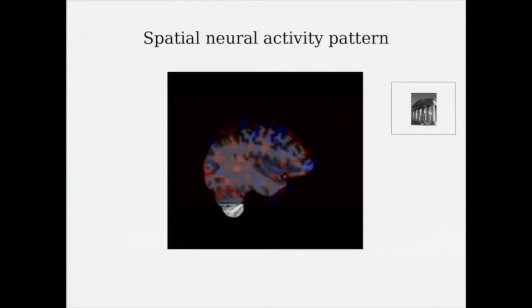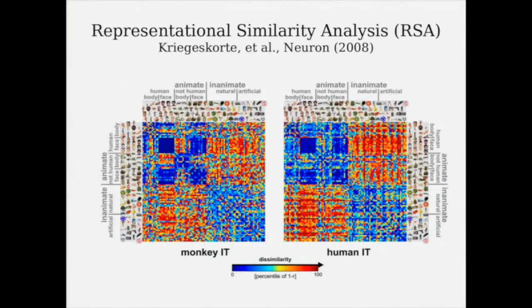So how do we make sense of these different neural patterns? And how do we understand the brain's representation to different types of images? One way neuroscientists have come up with is to look at the degree of similarity between the neural patterns when the participants are watching different images, which was proposed by Kriegeskorte et al.